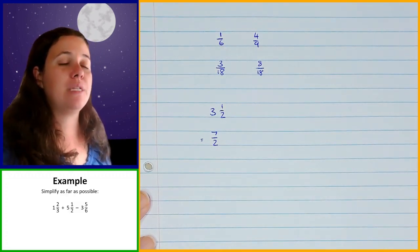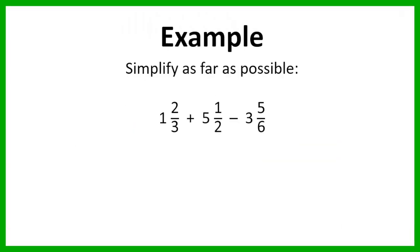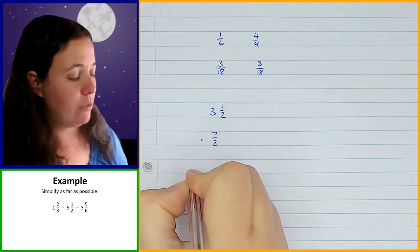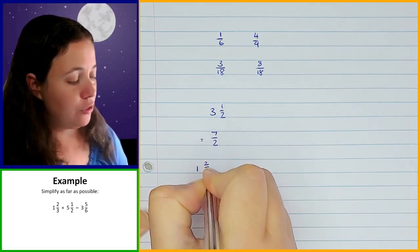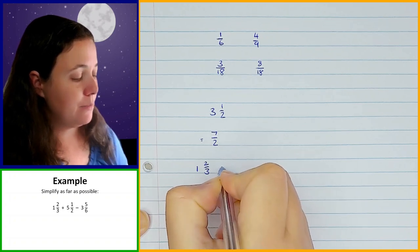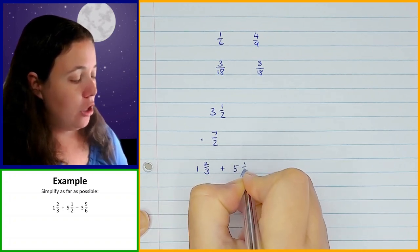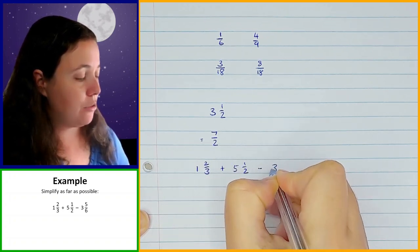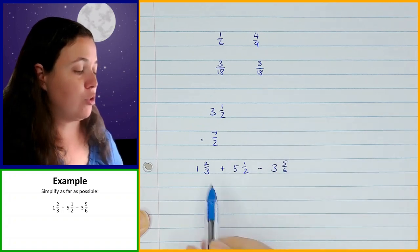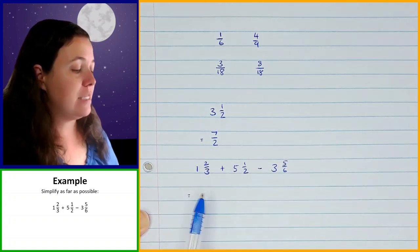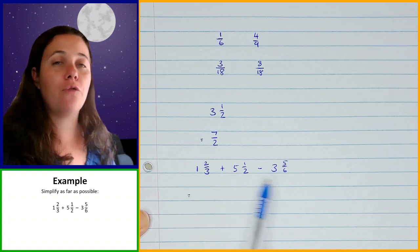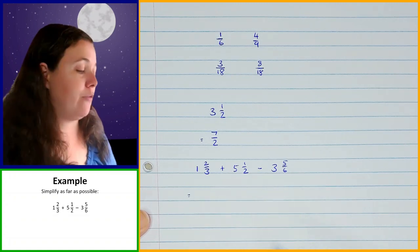So that's what we're going to be doing when we are doing the examples today. The first example we're going to go through is this one over here. We've got 1 and 2 thirds plus 5 and a half minus 3 and 5 sixths, and we need to simplify this as far as possible. So we've got 1 and 2 thirds — that's a mixed number — plus 5 and a half, also a mixed number, minus 3 and 5 over 6, which is also a mixed number. So remember, the first thing we're going to do is take those mixed numbers and convert them to improper fractions.